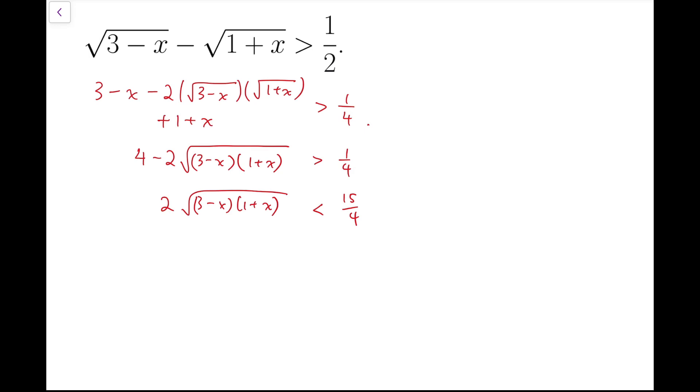And we can divide both sides by 2 and square again. So, at the end we will have this product to be less than 225 over 64.